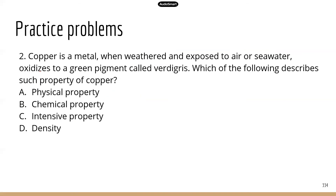Next: copper is a metal that when weathered and exposed to air or seawater oxidizes to a green pigment. Which of the following describes such property? The keyword 'oxidizes' gives you a clue — this is probably some kind of chemical reaction. Copper changes to a green pigment, which is the formation of a new substance. What kind of property leads to a new substance? Chemical reaction — chemical property. The correct answer is B.